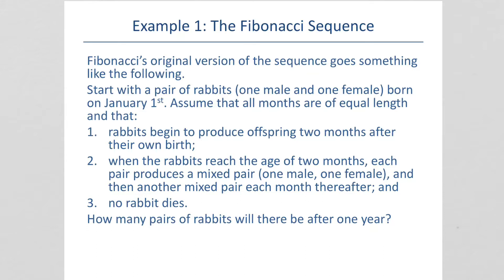So, Fibonacci, originally, his sequence goes something like this. He was interested in rabbits for some reason. Start with a pair of rabbits, one male and one female, born on January 1st.